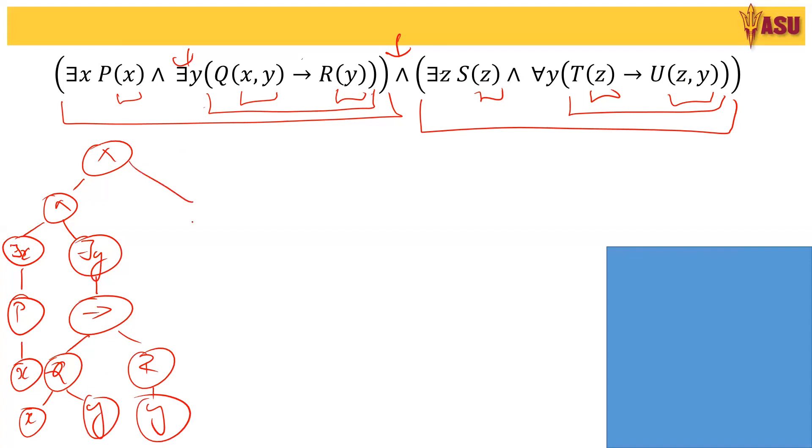So this is the left side. And now let's look at the right side. The right side again is an and. And this is there exists a z. This has an S and this has a z. The other side is for all y. So now I think this part of it is quite easy.